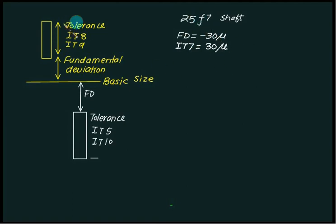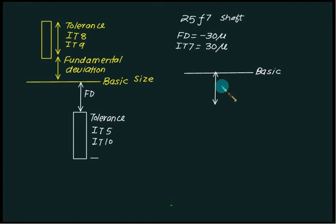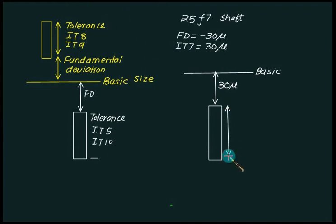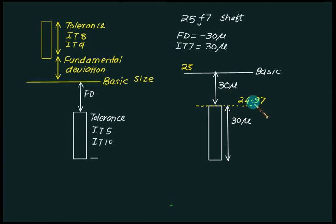Since the fundamental deviation is negative, we construct the figure below the basic size. Start with the basic size line, then draw a vertical distance of 30 microns below this line representing the negative fundamental deviation. After this, construct a tolerance band for IT7 equal to 30 microns below that. So 25 mm minus 30 microns gives 24.97, and subtracting another 30 microns gives 24.94.